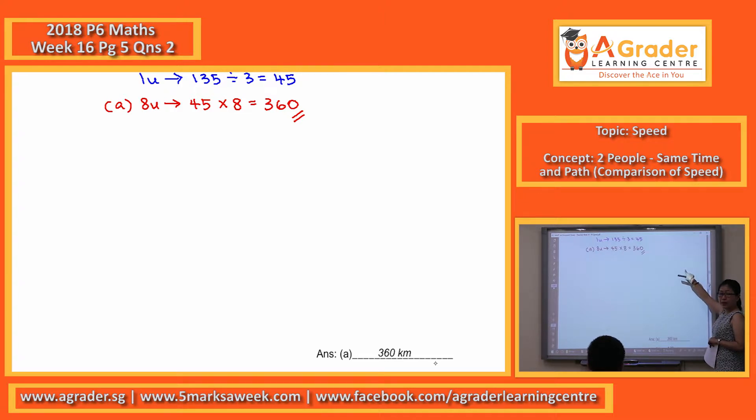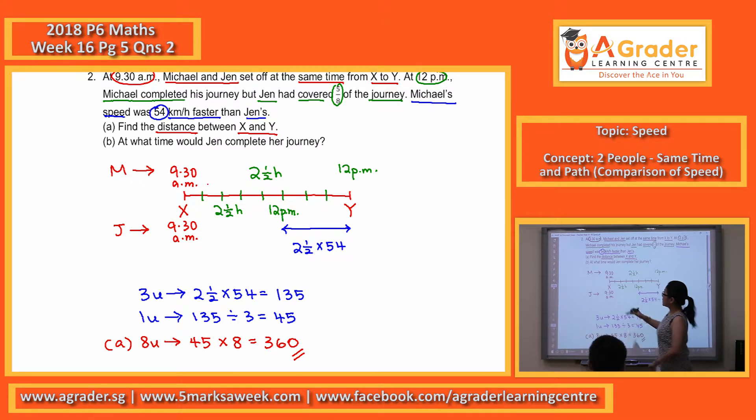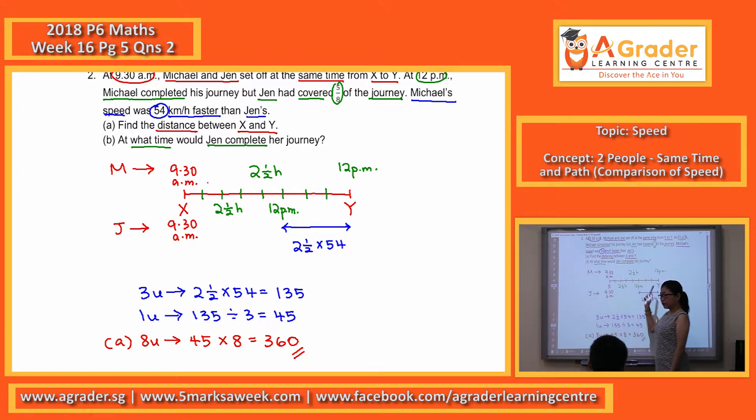Now we look at part B. Part B asks, at what time would Jen complete the journey? So Jen still needs to travel the 3 units, right? So you want to find the time that she reached. It will be related to time taken. To find time taken, it will be distance divided by speed.